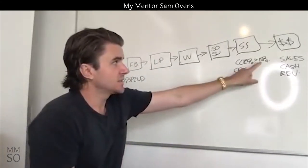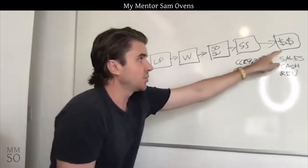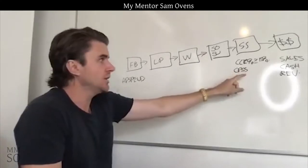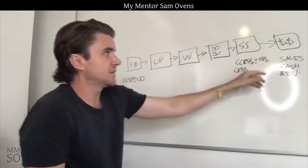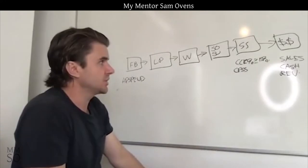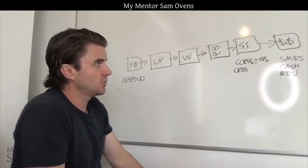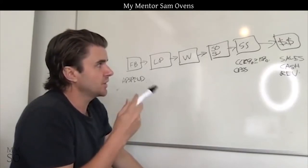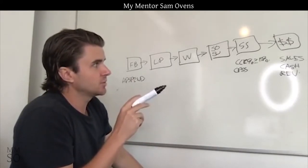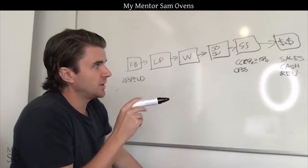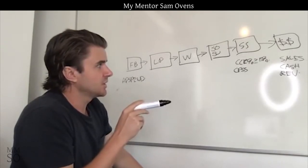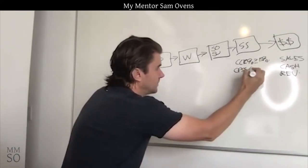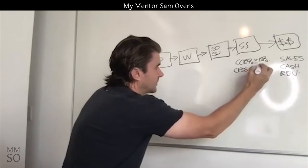The higher your call conversion rate and the higher your product price, the more you can afford to pay per strategy session. The lower both are, the less you can afford. The threshold cost per strategy session, given a call conversion rate greater than or equal to 15% and a sale price greater than or equal to $2,000 collected in cash, would be less than or equal to $300.